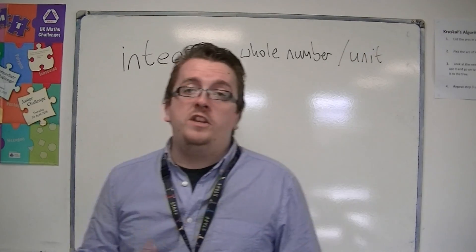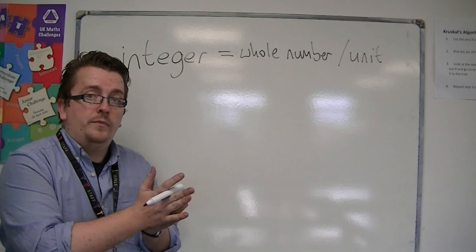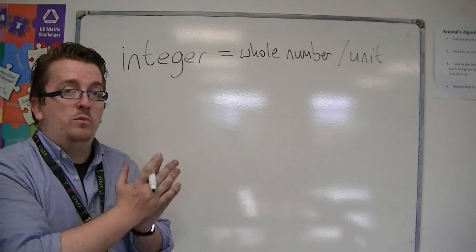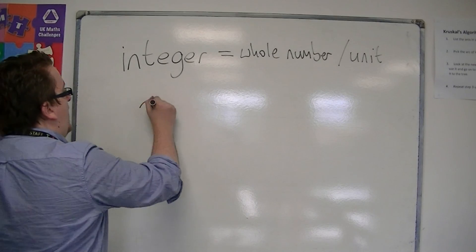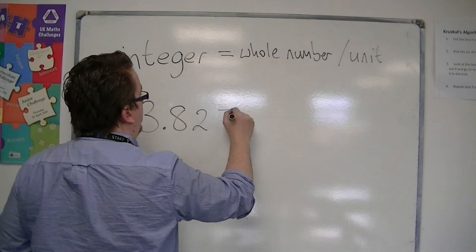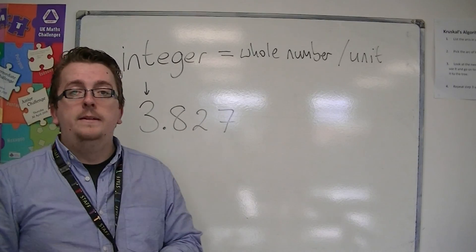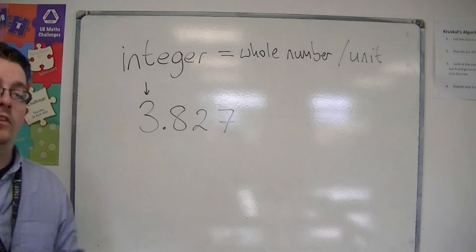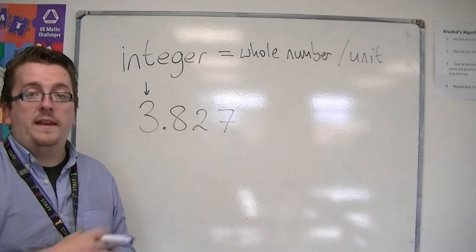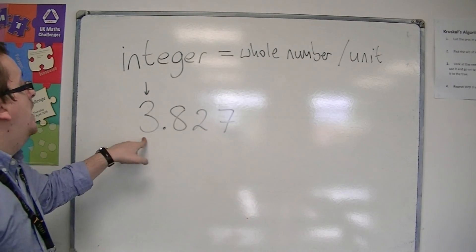Unit is that place value where we are one to the left of the decimal point. So if I look at a number 3.827, this is the unit's column. If you go back and look at the video I made right at the beginning, we looked at place value. This is the unit's column.